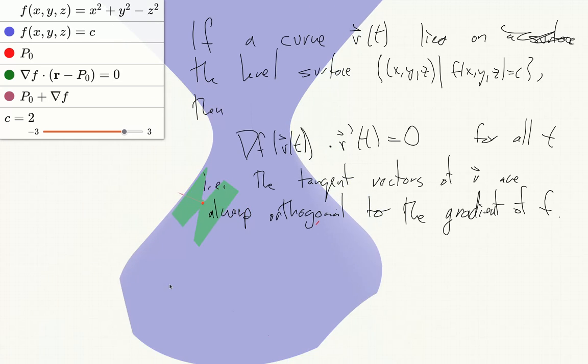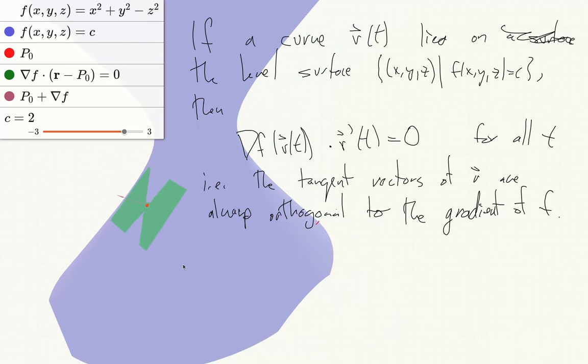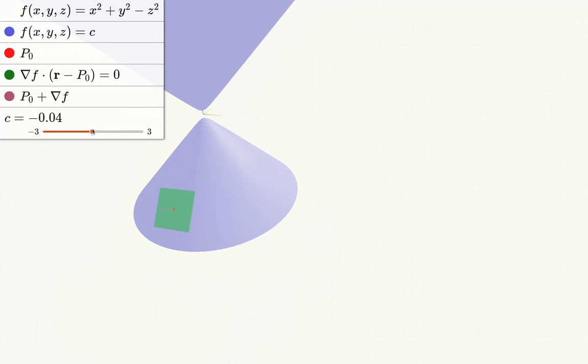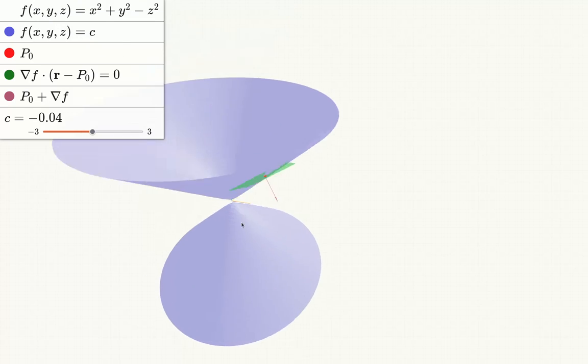So there's a plane's worth of vectors which are orthogonal to a given vector, orthogonal to the gradient. So we make the following definition.